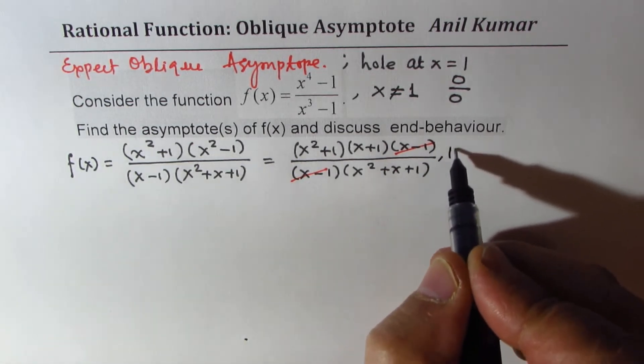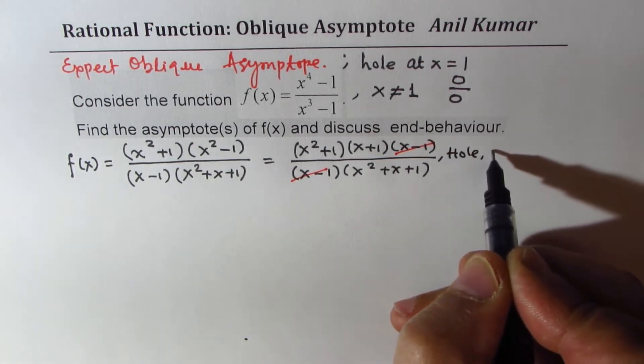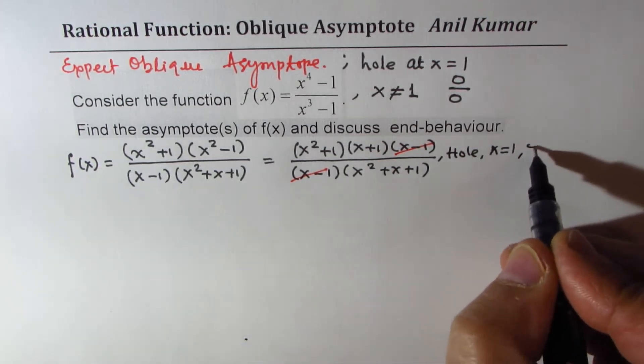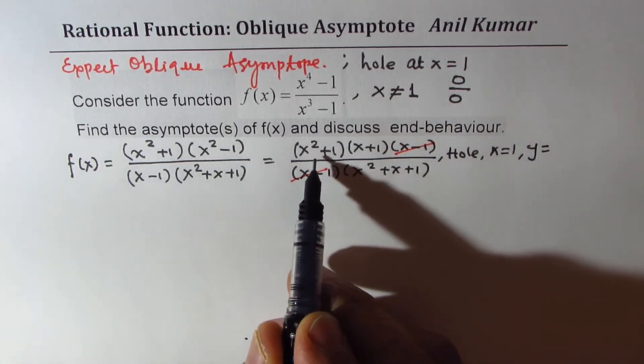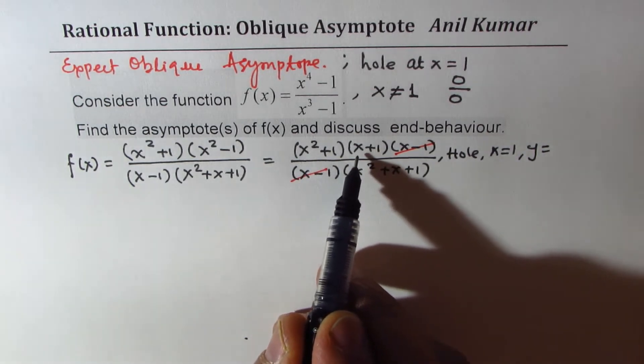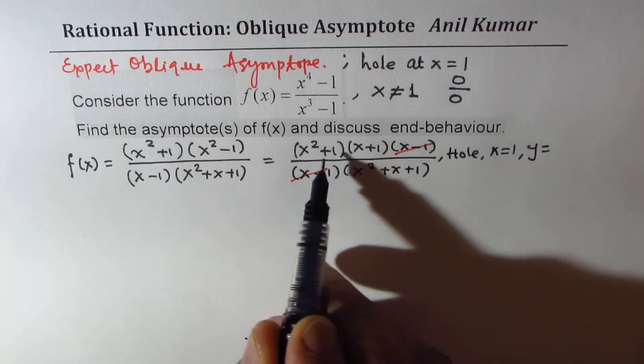Now, that means we have a hole at x equals 1. So if I substitute 1 here, I get y equals to what? 1 plus 1 is 2, and then we get 1 plus 1 also 2.